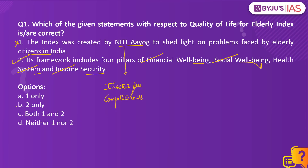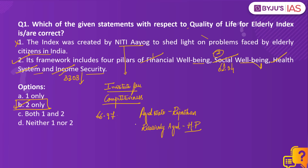Therefore the right answer to this question would be option B, two only. The health system pillar observes the highest national average score of 66.97 at an All India level, followed by social well-being and financial well-being. States have performed particularly worse in the income security pillar, with over half scoring below the national average of 33.03. In the index, Rajasthan and Himachal Pradesh are the top scoring regions in the aged and relatively aged state categories respectively.